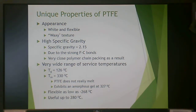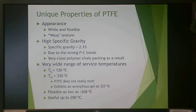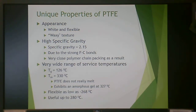Teflon has a white, almost waxy appearance and a very high specific gravity. The strength of the carbon-fluorine bonds causes them to pack together very closely in this semi-crystalline polymer, giving a density higher than high-density polyethylene. It has a wide service temperature range — TG of 126°C, TM of 330°C. Teflon doesn't truly melt; it becomes an amorphous gel around 327°C, which is the form in which it is processed. It can be flexible down to -268°C and remains useful up to 280°C.